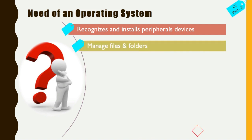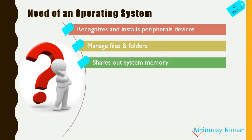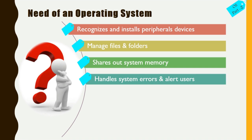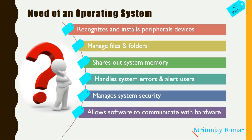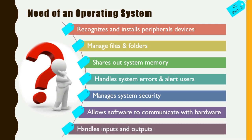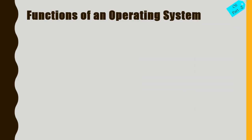Number two: it manages files and folders. Number three: it shares out system memory — that means it allocates memory to different applications and hardware as per requirement. It handles system errors and alerts whenever any error occurs, providing appropriate alerts to the user. It manages system security, allows software to communicate with hardware, and handles all inputs and outputs. These are the major reasons why we need an operating system.